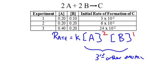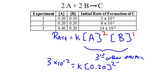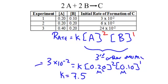To find the numerical value of K, plug in data from any experiment — I'll use the first one. Rate = 3×10⁻² = K × (0.20)² × (0.10)¹. Solving gives K = 7.5. The units of K for a third order overall reaction are molarity⁻² × s⁻¹, because I need to cancel two molarities and keep seconds to the negative one.